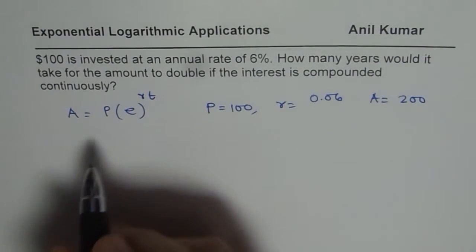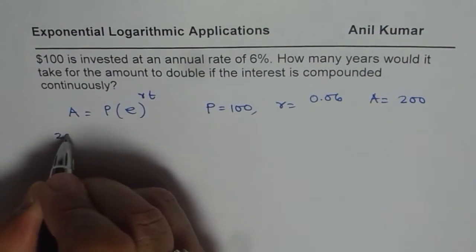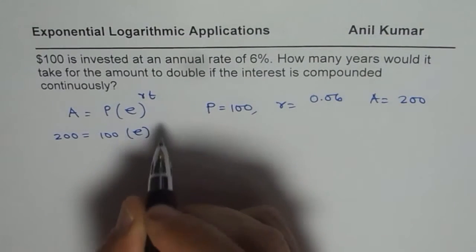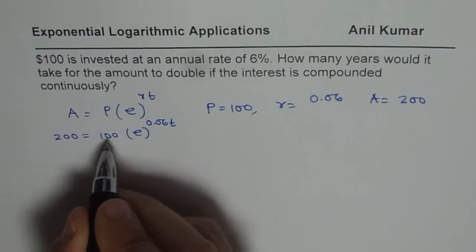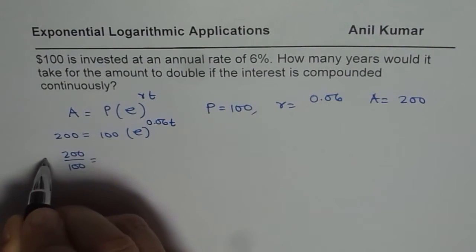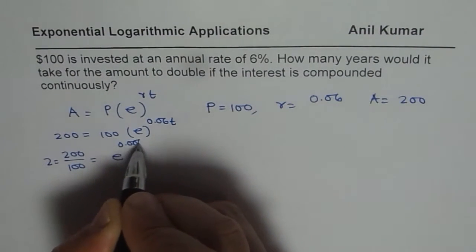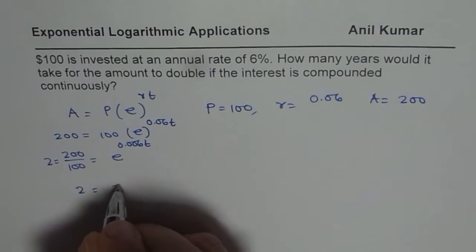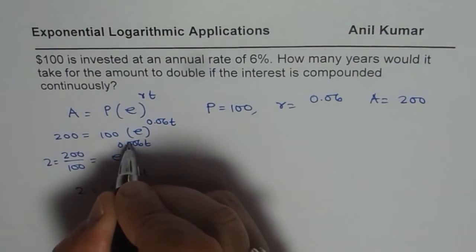So we can substitute these values and then find. So we have 200 equals to 100 times e to the power of R which is 0.06t. Now we can divide by 100. So we get 200 divided by 100 and as expected it is 2 equals to e to the power of 0.06t.